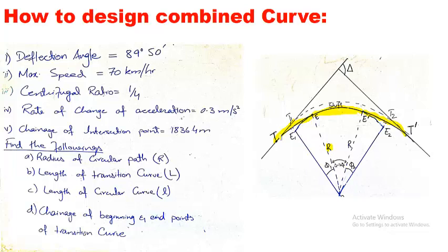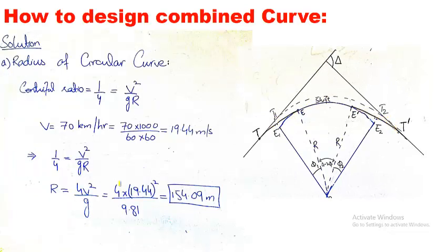The key to this problem is knowing the formulas for each parameter. If you know the formulas to calculate the radius of the circular path and the length of the transition curve, it becomes straightforward. The radius of the circular curve depends upon the speed of the vehicle — the greater the design speed of the highway, the greater the required radius.